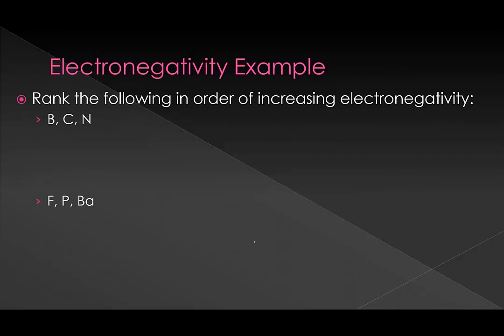Let's do some practice. For boron, carbon, and nitrogen — all in the same row — because electronegativity is measured in a bond, the atoms already have stable electron configurations, so there aren't nearly as many exceptions. We can just follow the horizontal trend. The horizontal trend is caused by effective nuclear charge: as we go to the right, effective nuclear charge increases, increasing electronegativity. So boron, being farthest to the left, has the lowest, followed by carbon, then nitrogen.